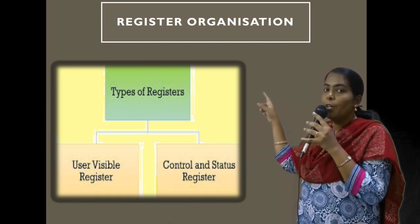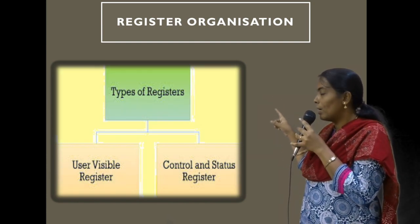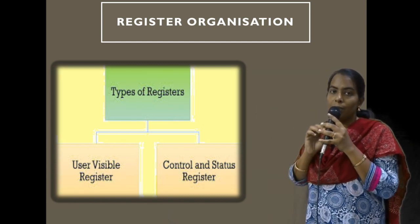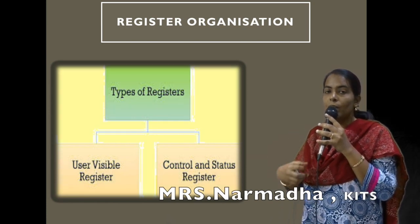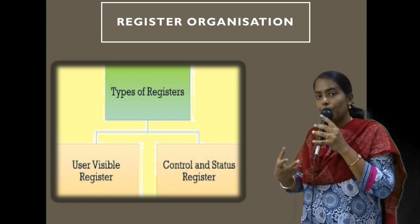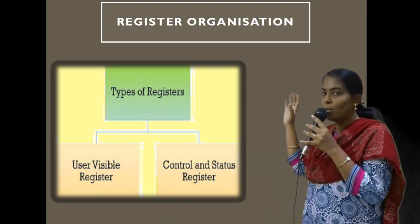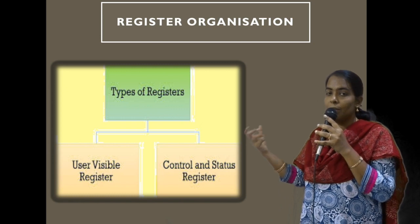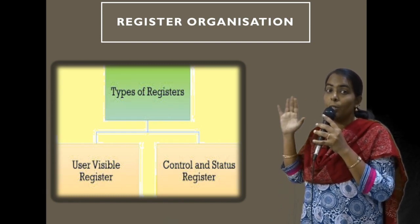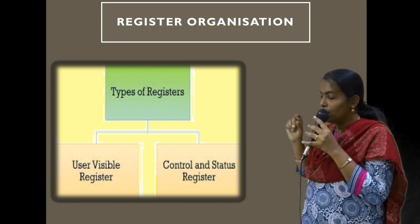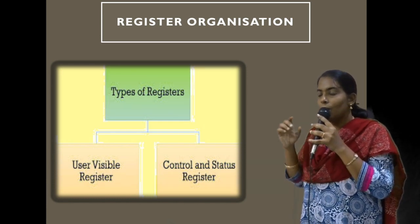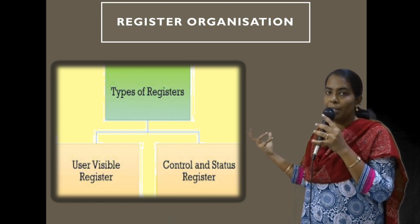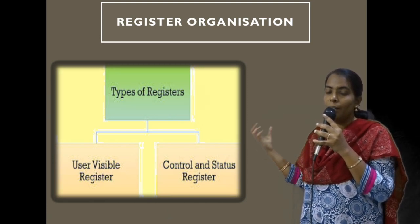There are two different types of registers. The first is called the user visible register. These are registers that are visible to assembly language programmers and normal users. They are used in order to reduce the number of memory references — if you want to store data temporarily, you can store it in the register and perform computation to minimize memory references. The second type is the control and status register, which is used by the control unit to coordinate all operations such as data movement into and out of the processor.